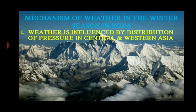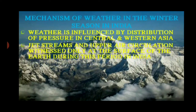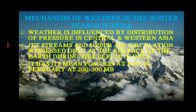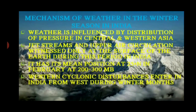Winter weather is further influenced by the distribution of pressure in central and western Asia, jet streams, and upper air circulation. During this period in India, the jet stream has its mean position at 25 degrees north in February at 200 to 300 MB. Western cyclonic disturbances enter India from the west during the winter months.